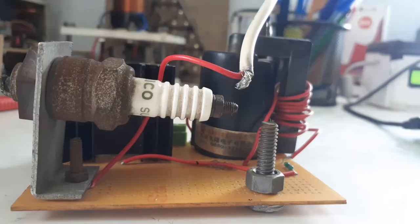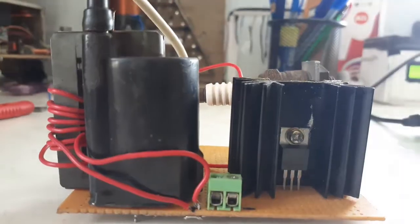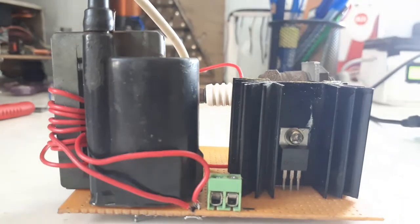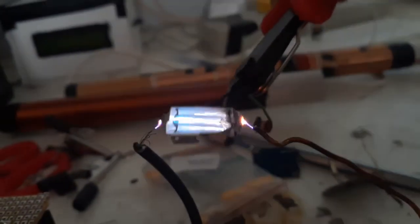So in this video we will learn about flyback transformers and how to build a 20,000 volt power source, as well as we will delve into the fourth state of matter which is plasma state. So let's get started.